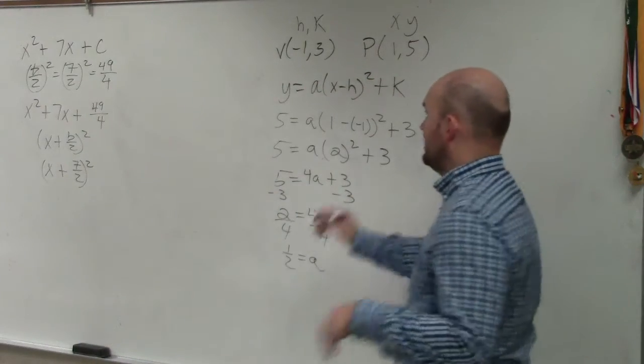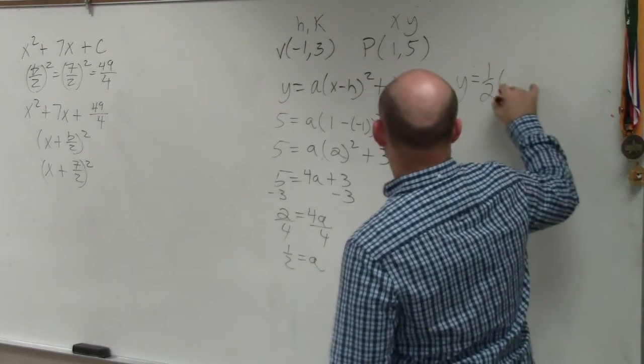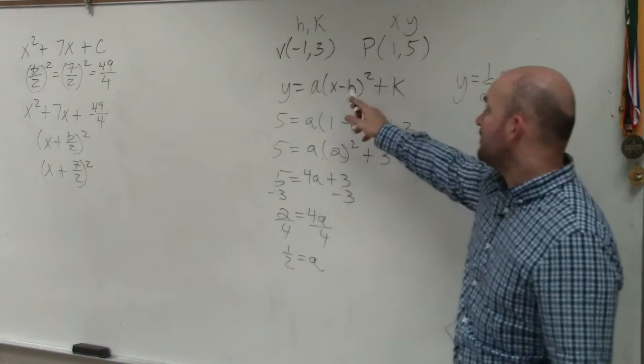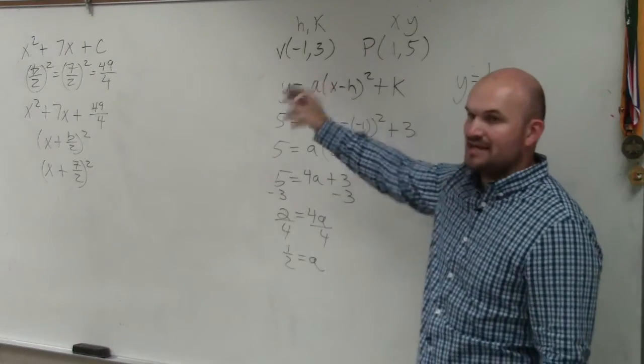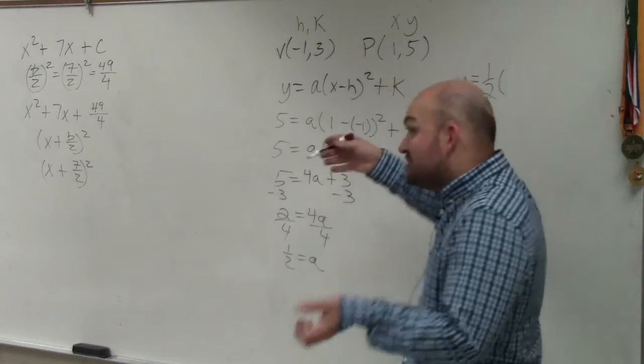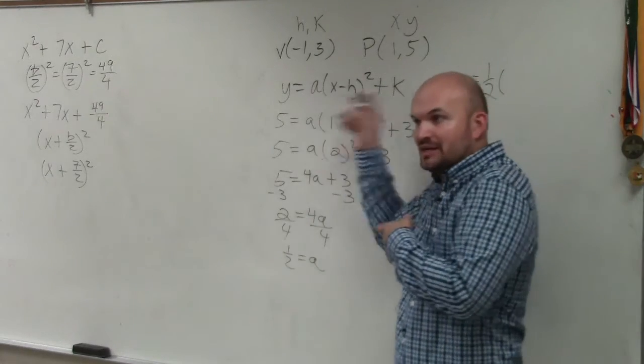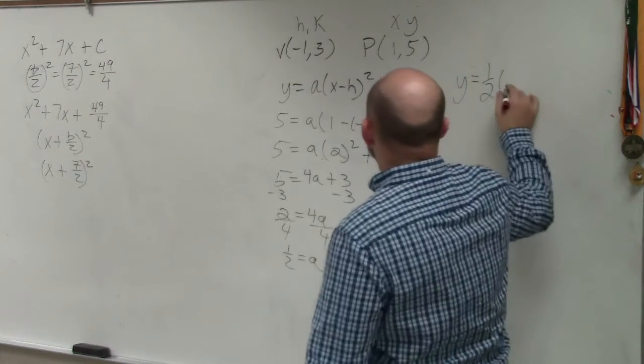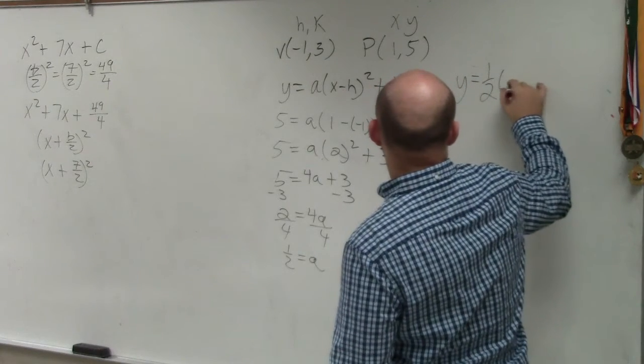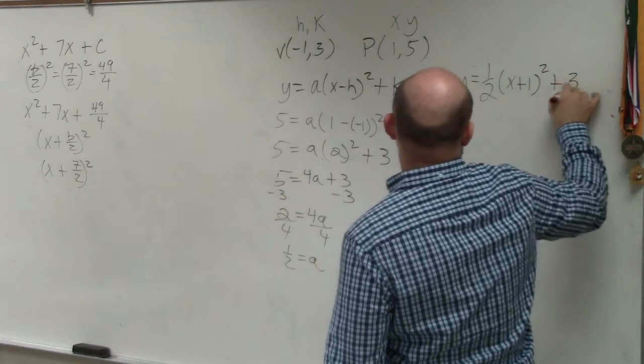Now, we just take that equation and we write in y equals. Now my a is 1 half. I don't need to write in, I want to write in my h and my k, but I'm going to leave the x and the y out, because those represent infinite many points. But the h and the k is a special point, because that's the point of the vertex. So we're going to leave the h and the k in there. So that's going to be x plus 1 squared plus 3.